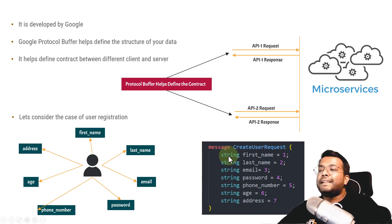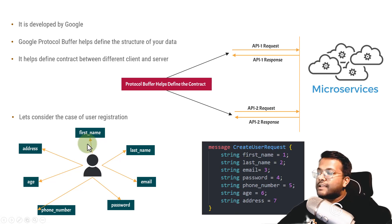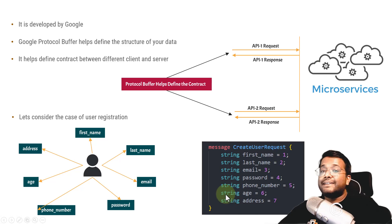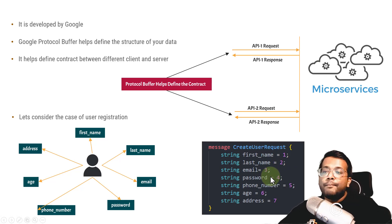The contract will be defined as a message. The name of the contract is 'CreateUserRequest', then fields: first name, last name, email, password, phone number, age, and address. You also define the data type — here it's kept simple, with age also taken as a string, but you can treat it as int32 or something else. We'll see later what are the different data types defined by Google Protocol Buffer. And there are position numbers — 1, 2, 3, 4, 5, 6 — given to each field, which has importance in the serialization and deserialization of the data. We'll see that also.